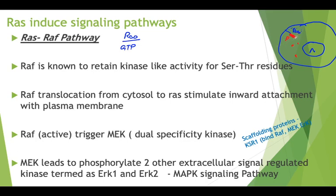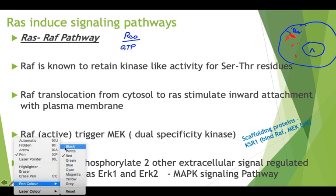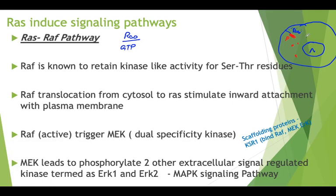These proteins are called MEK. MEK is another protein that also gets phosphorylated. The RAF complex, labeled in red, phosphorylates another complex called MEK. Upon the translocation of MEK, it has a very interesting role — it has a dual specificity kinase property.